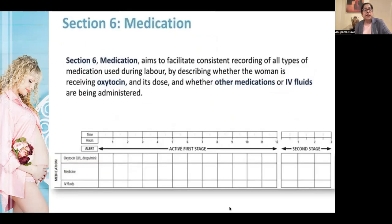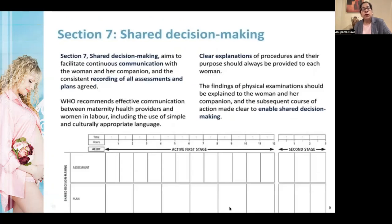Section six includes medications — oxytocin, any other medications, and IV fluids given. The most important section — section seven, shared decision-making — aims to facilitate continuous communication with the woman and her companion, and consistent recording of all assessments and agreed plans. Clear explanation of procedures and their purpose should always be provided, findings of physical examination explained, and the subsequent course of action made clear to enable shared decision-making.